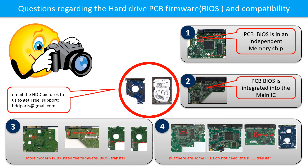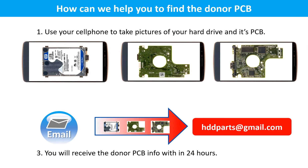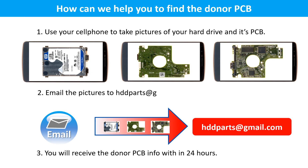How can we help you find the donor PCB? 1. Use your cell phone to take pictures of your hard drive and the PCB. 2. Email the pictures to hddparts@gmail.com or text the pictures to 604-762-6359. You will receive the donor PCB information as soon as we can.